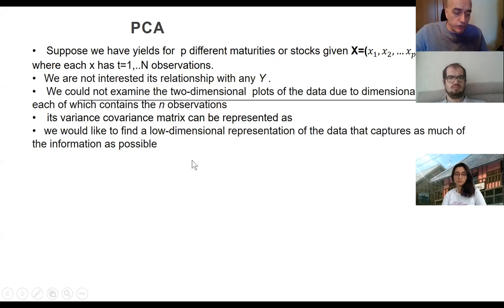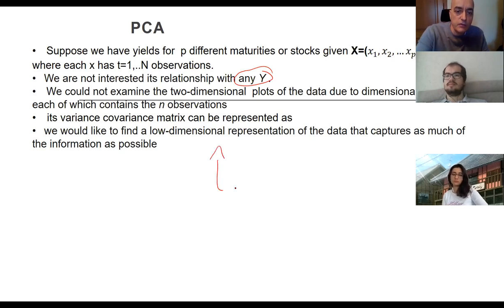As I said, we are no longer interested in this context how they are going to be related to Y. Once we reduce the dimension, we can consider principal component regression, which is a doable area as well. But this method is not mainly for regression, it's mainly for X's.